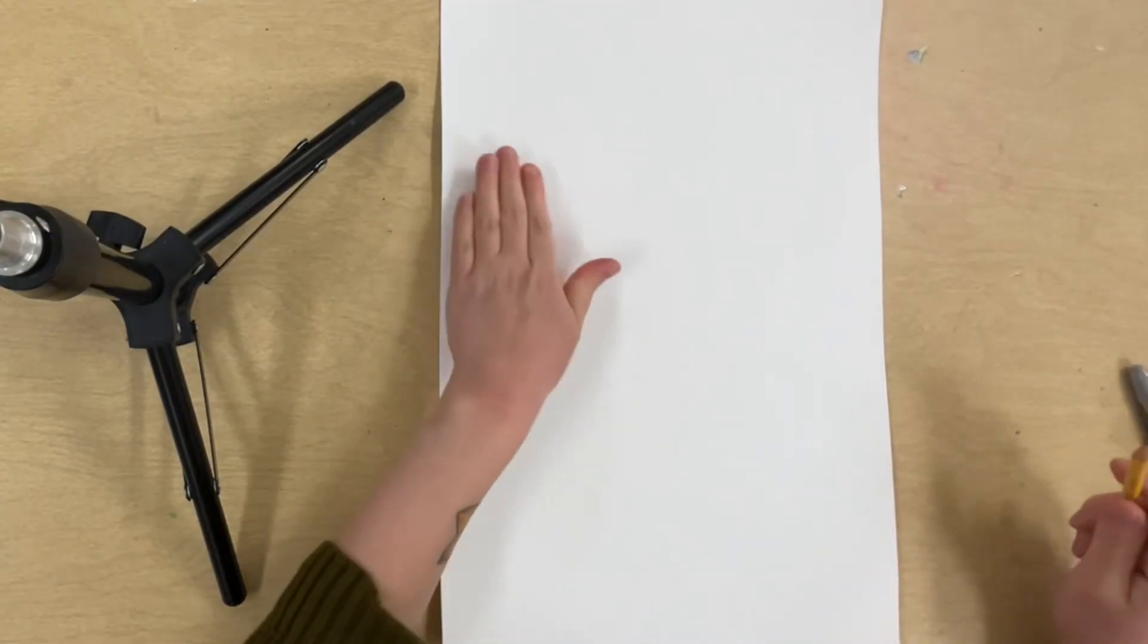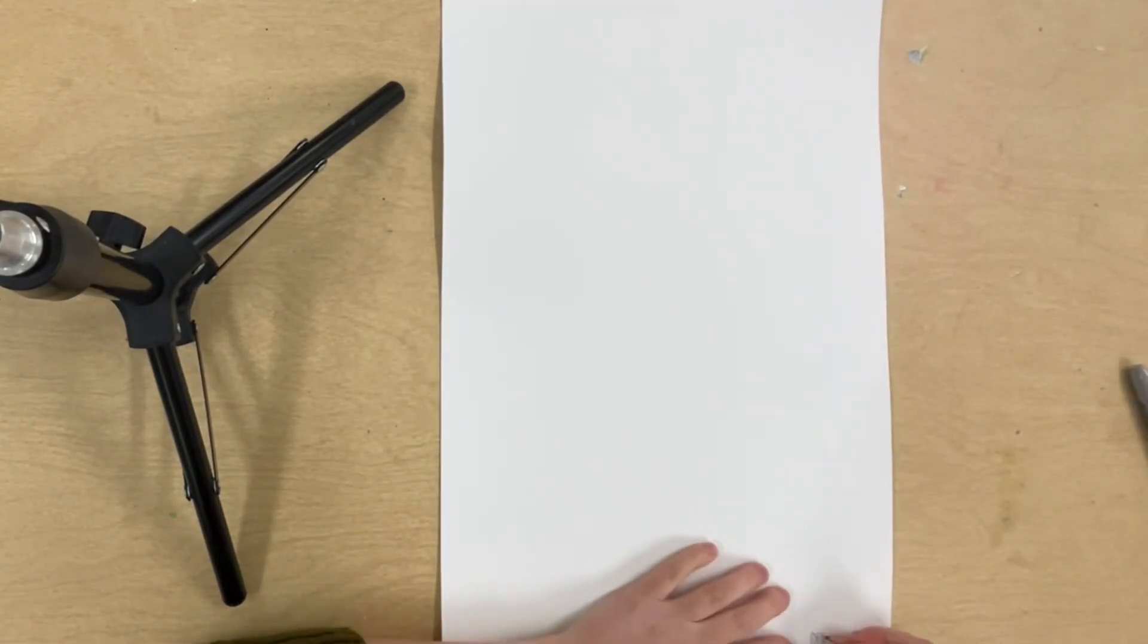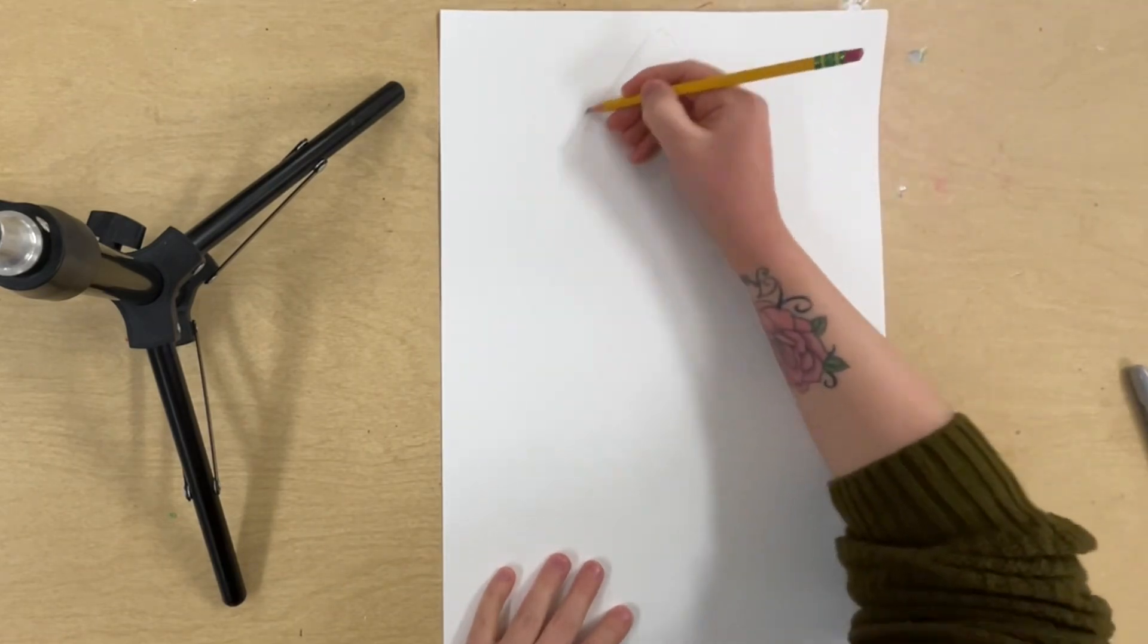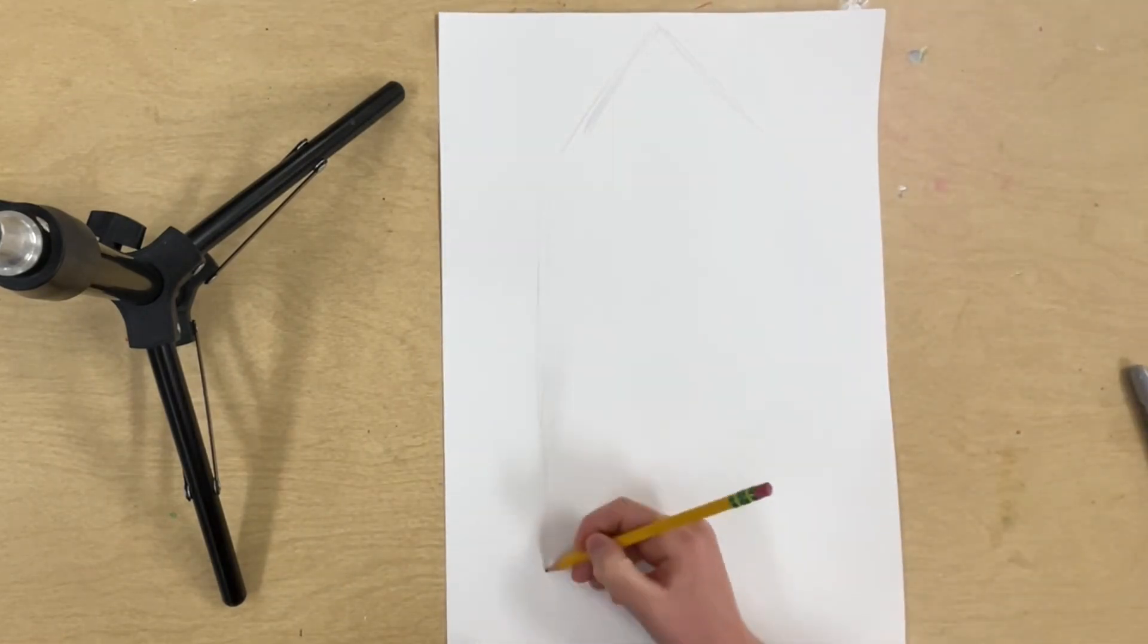Today I'm drawing and painting a gemstone using value. First I'll write my name on the paper, and then I'm going to sketch out my gemstone. You'll have a few different options of different kinds of gemstones you can draw.